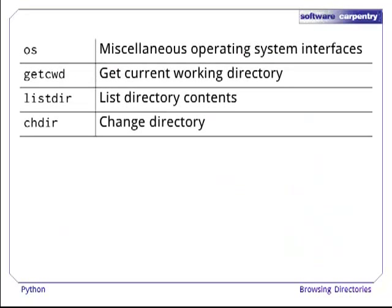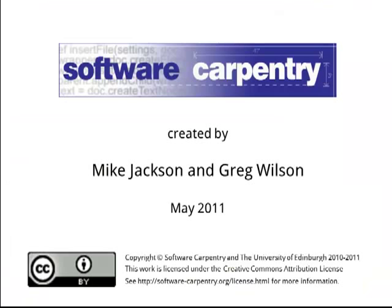So, to summarize, we have used the following functions in the Python OS module to browse directories. Getcwd allows us to get the current working directory. Listdir allows us to list the contents of a specific directory. And chdir allows us to change the current working directory to be a specific directory. Thank you for listening.